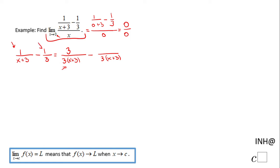The same story for the 1/3. The equivalent expression with this denominator will be (x+3) over 3(x+3). Now they have the same denominator, we can subtract. So we have 3 minus (x+3), be careful here, over 3(x+3).